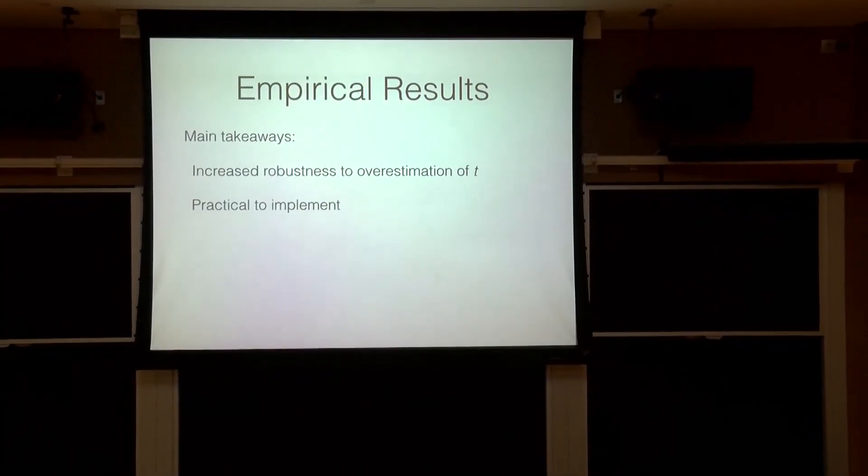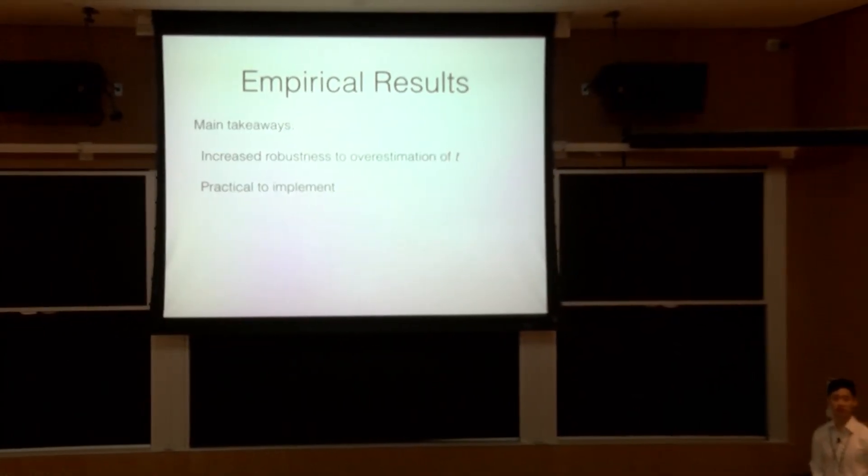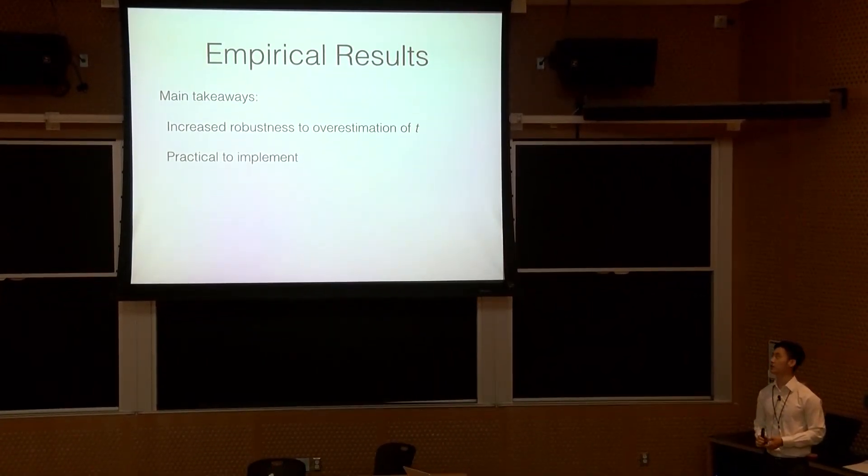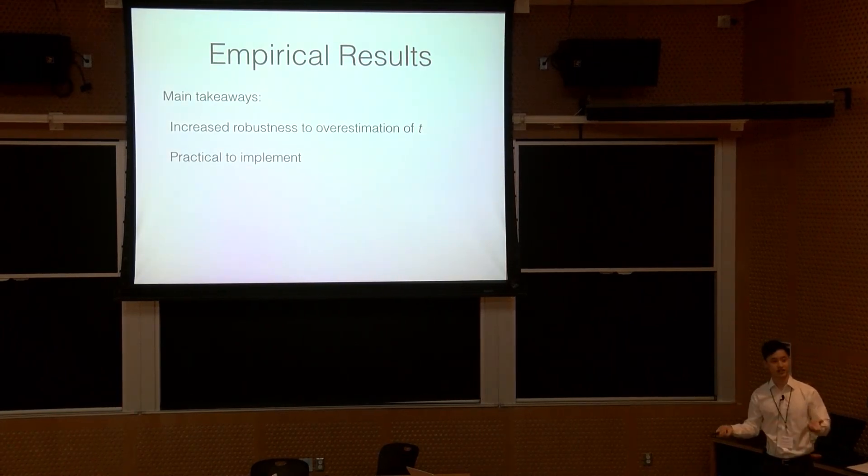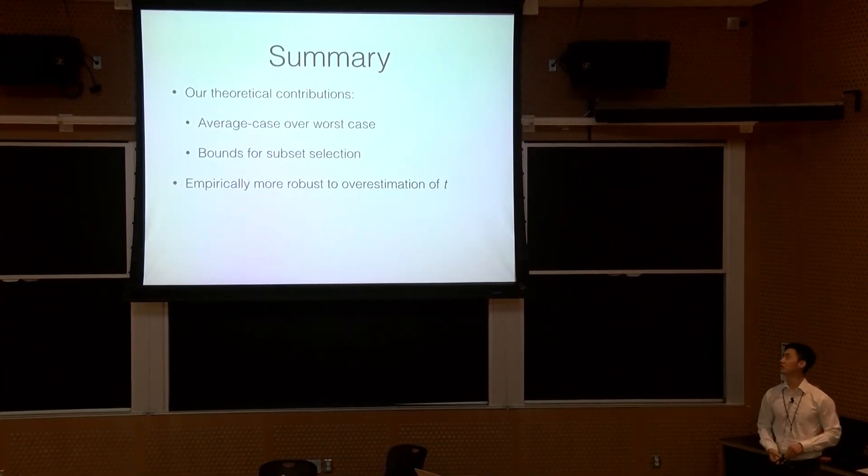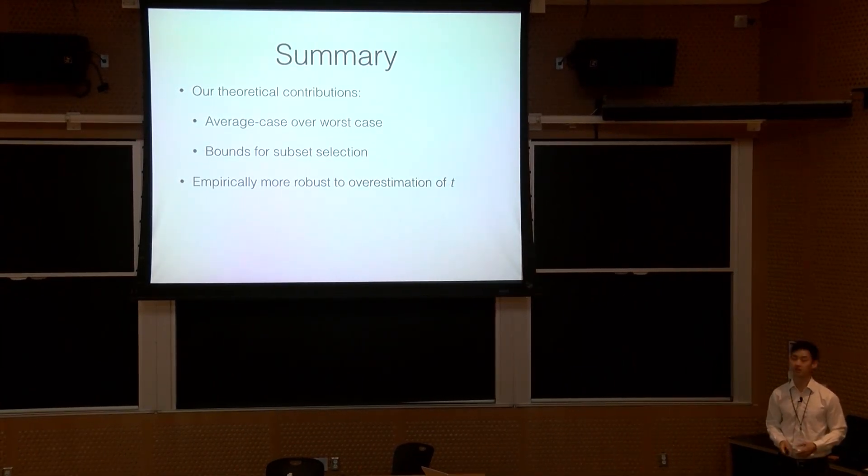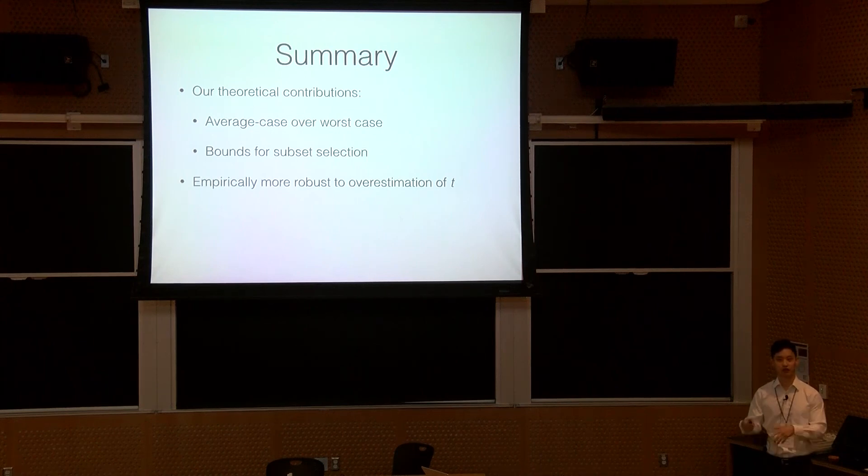And that's a very quick summary. We have two theoretical contributions. We added an average case over worst case analysis and talked about bounds for subset selection as well as full ranking selection. And this is empirically a lot more robust to overestimation of T. Even though this data set was kind of noisy, we have many more figures in the full version of our paper that show this more naturally. Thank you.